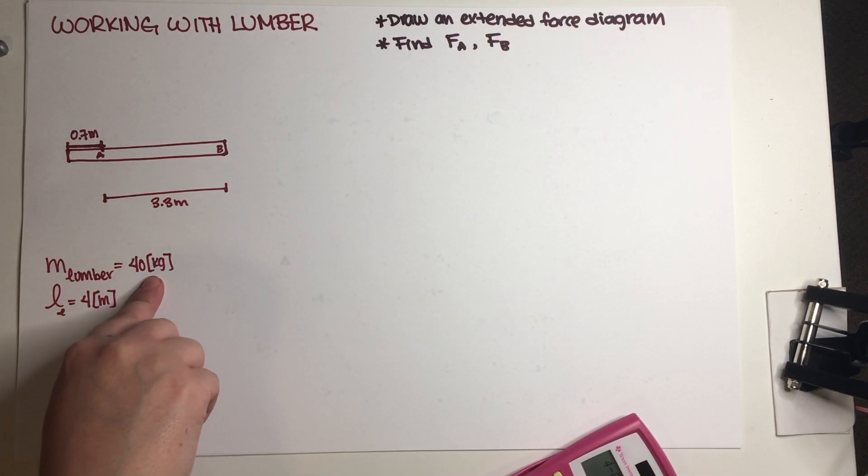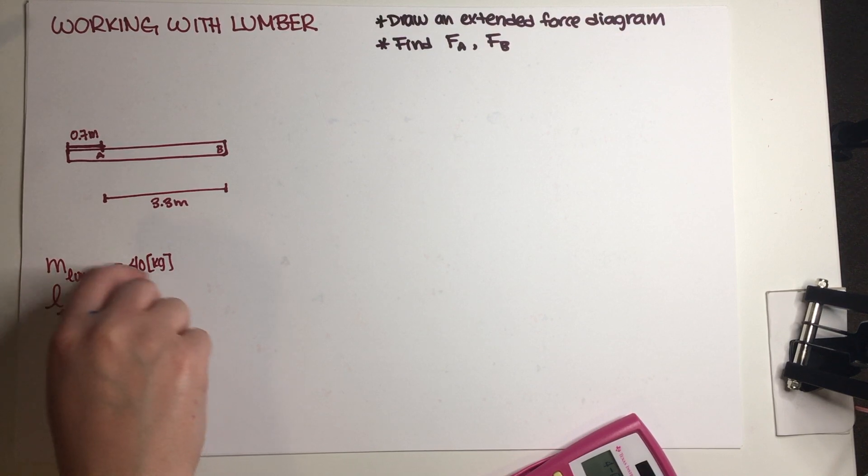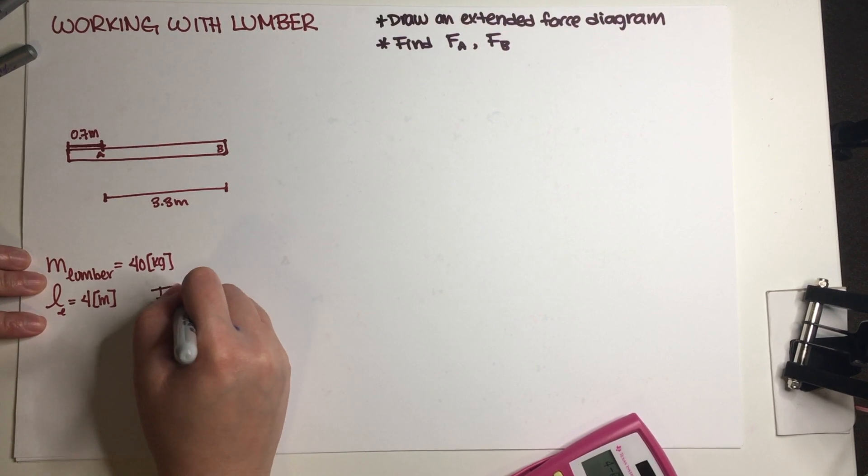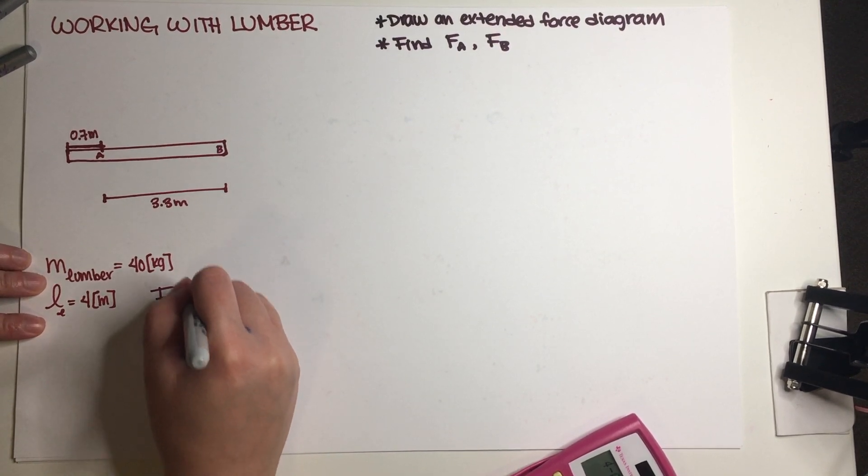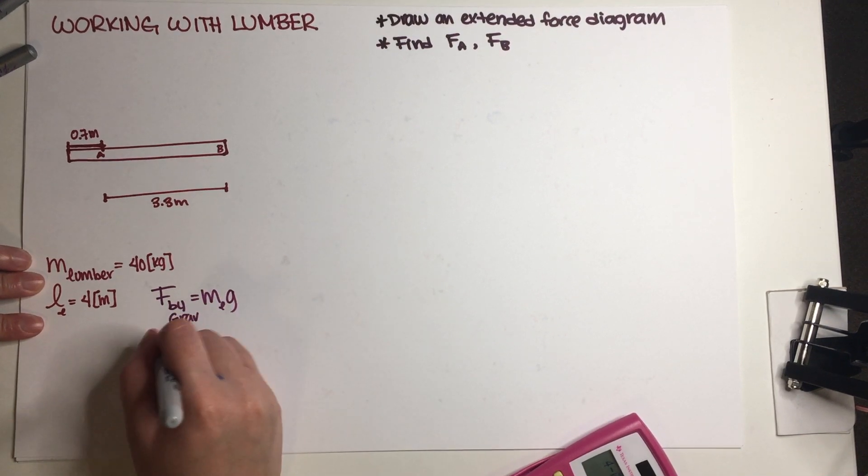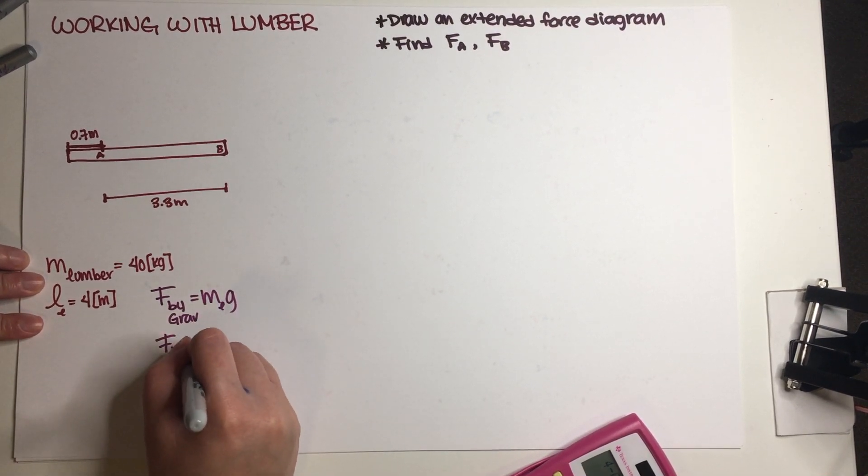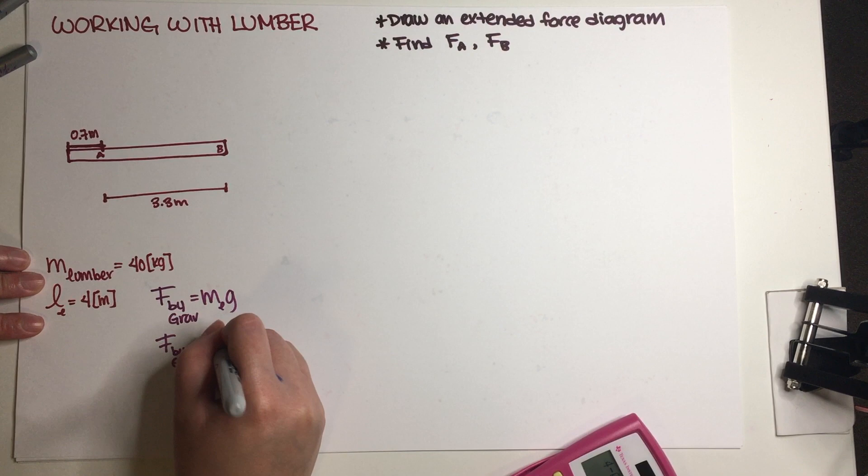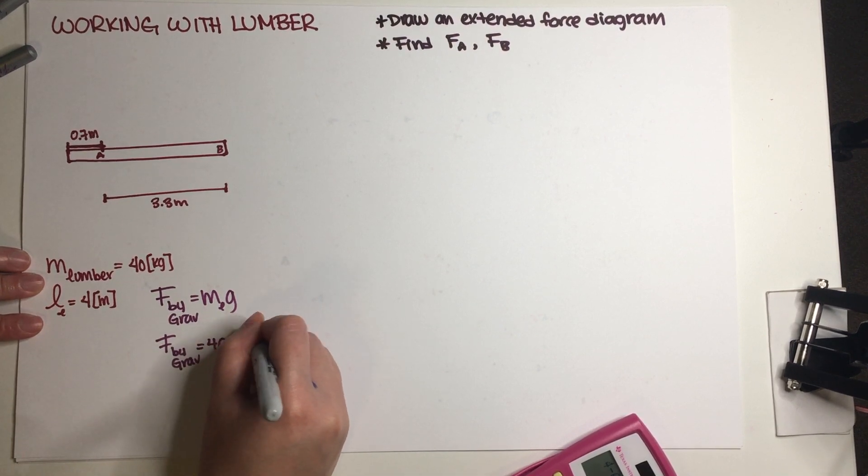We also know that the lumber has a mass of 40 kilograms, which means that there's going to be a force by gravity equal to the mass of the lumber times g, so force by gravity is going to be 400 newtons.